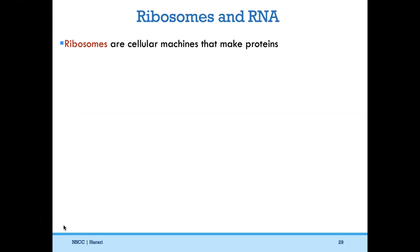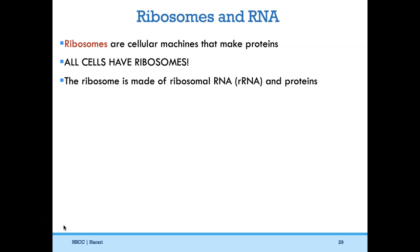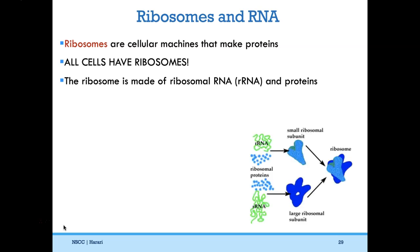Another feature all cells have in common, in addition to the plasma membrane, are ribosomes. Ribosomes are cellular machines that make proteins. Since proteins are made up of amino acids, and amino acids are a building block of life, all living things need proteins, so all cells have ribosomes. The ribosome itself is made up of ribosomal RNA (rRNA) and proteins — roughly two-thirds RNA and one-third protein. It is actually the RNA that is the enzymatic part, making ribosomes an example of a ribozyme — an enzyme made of RNA, which is unusual since most enzymes are proteins.